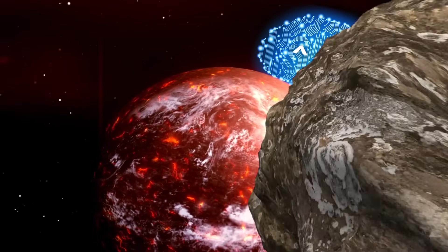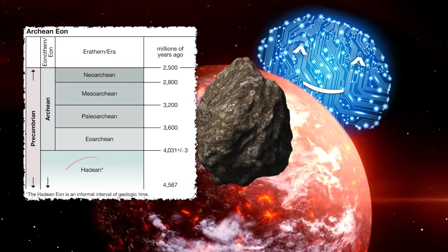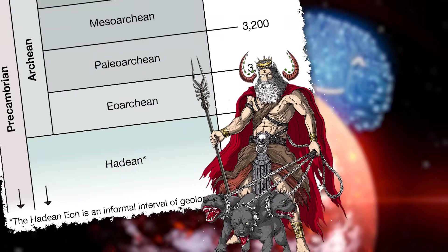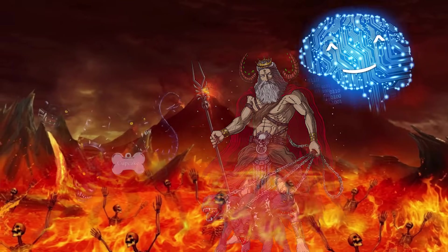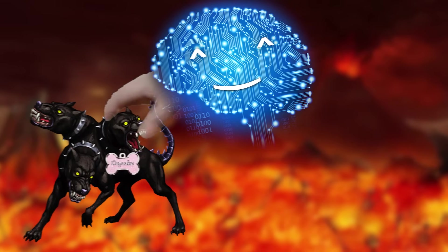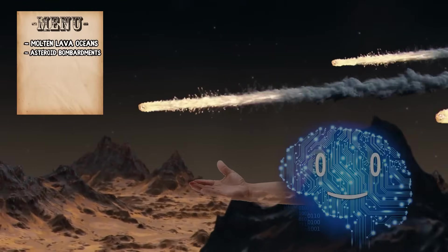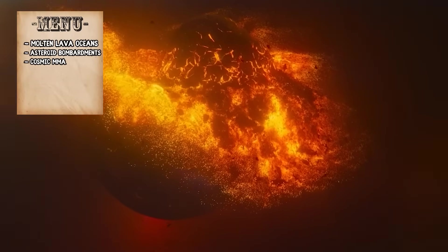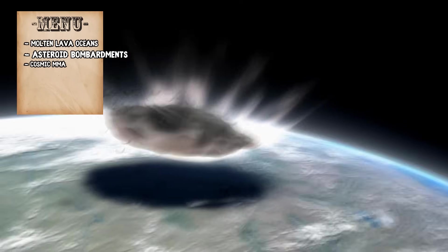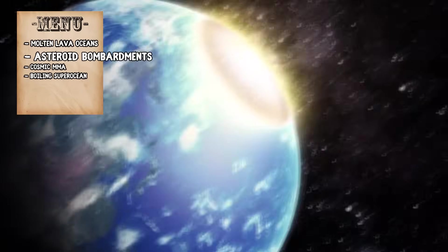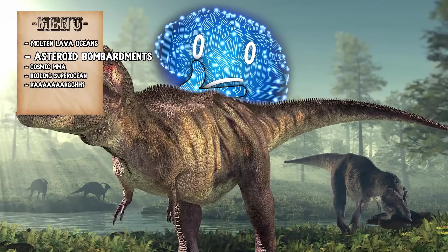You know it's gonna be a good one when a period of Earth's history is named after Hades, the Greek god of hell and of the dead and of cute three-headed doggos. Here we've got molten lava oceans, asteroid bombardments, a Mars-sized planet ramming into Earth, asteroid bombardments, a boiling super ocean, asteroid bombardments, maybe dinosaurs. Nope, still asteroid bombardments.